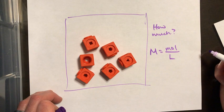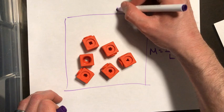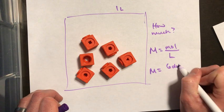So if we look at this particular situation and we call this box one liter, and we call these dots each a mole of solute, well then we'd say the molarity of this particular box is I don't know, six dots per one liter, or six big M.